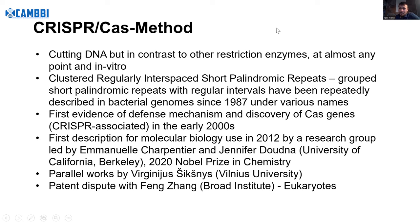What CRISPR-Cas does that other restriction enzymes don't is it can cut at almost any point. Most restriction enzymes are specific for four to eight different bases in specific positions. But if I want to cut DNA somewhere else, I need another tool. CRISPR was basically the first tool that was almost freely programmable to cut in any position. We can use it in vivo, in a living cell, in a living organism, and that's what makes it a huge step for medicine, molecular medicine, and gene therapies — it enabled the first gene therapies that will now come to market maybe this year.